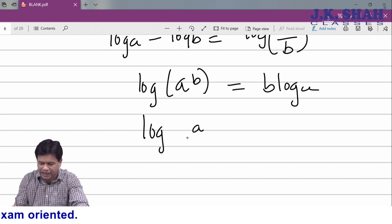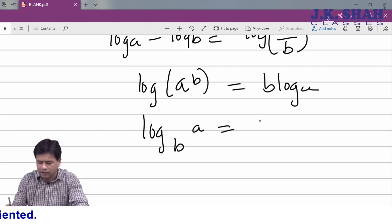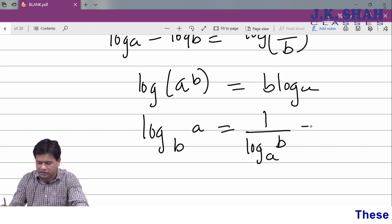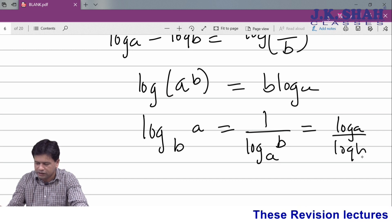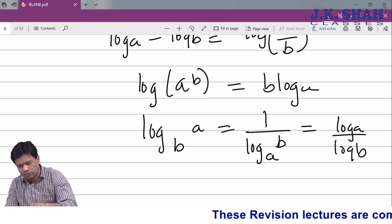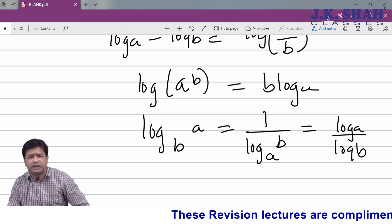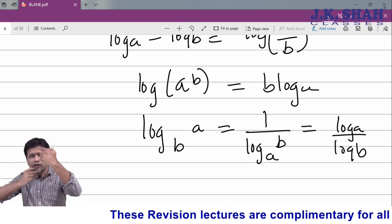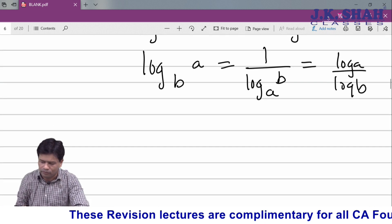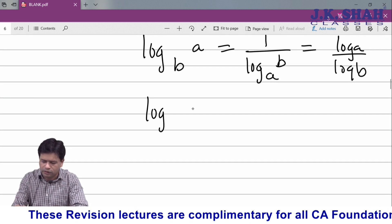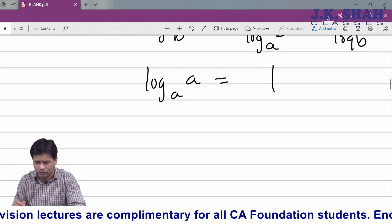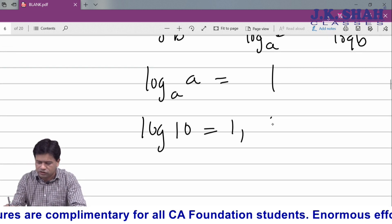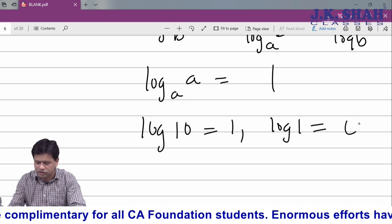Log of a to the base b equals 1 upon log of b to the base a. If you shift the denominator to the numerator, the terms are interchanged. Log of any number to the same base, a positive number to the same base, is 1. Standard value of log 10 is 1; standard value of log 1 is 0.